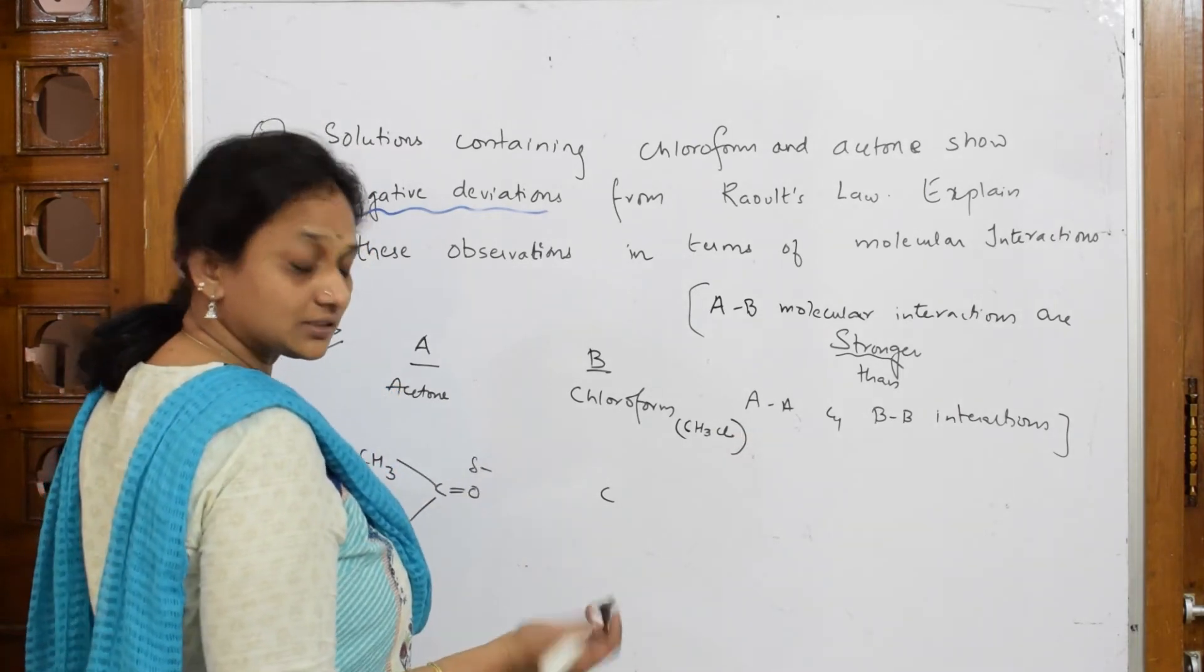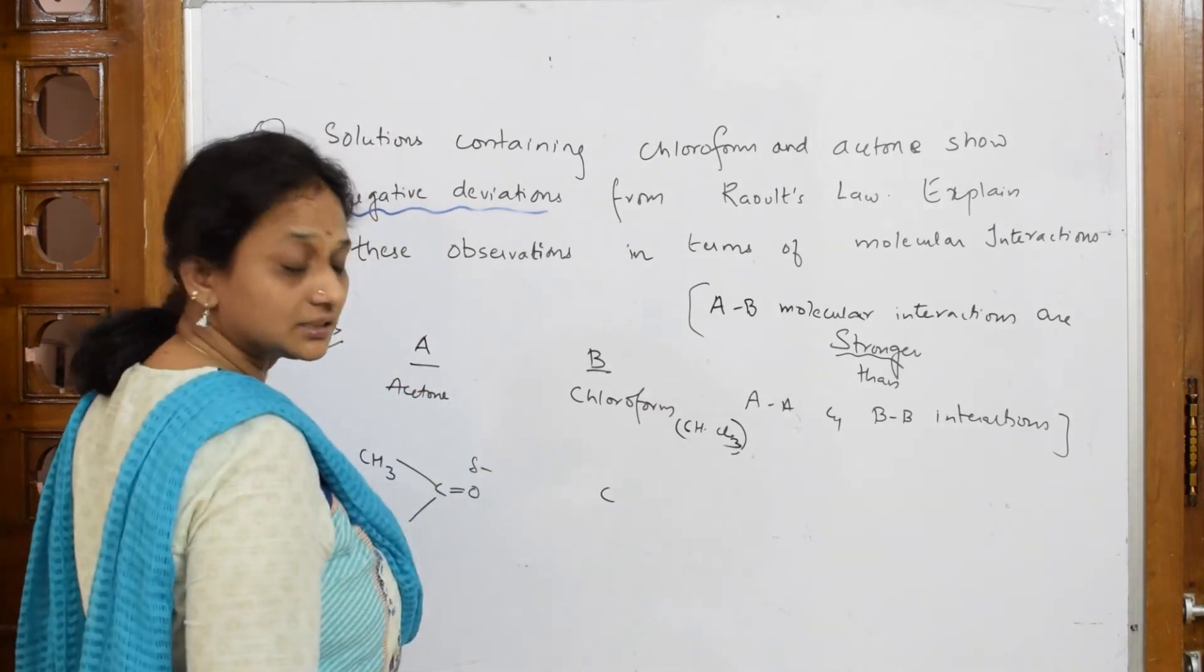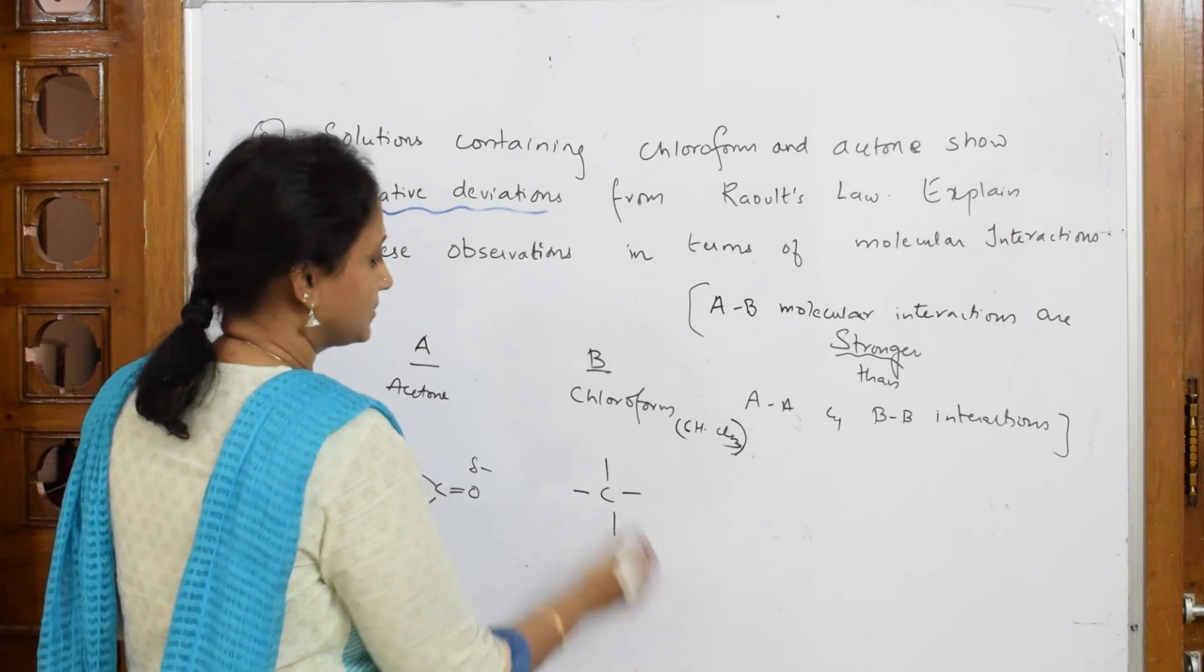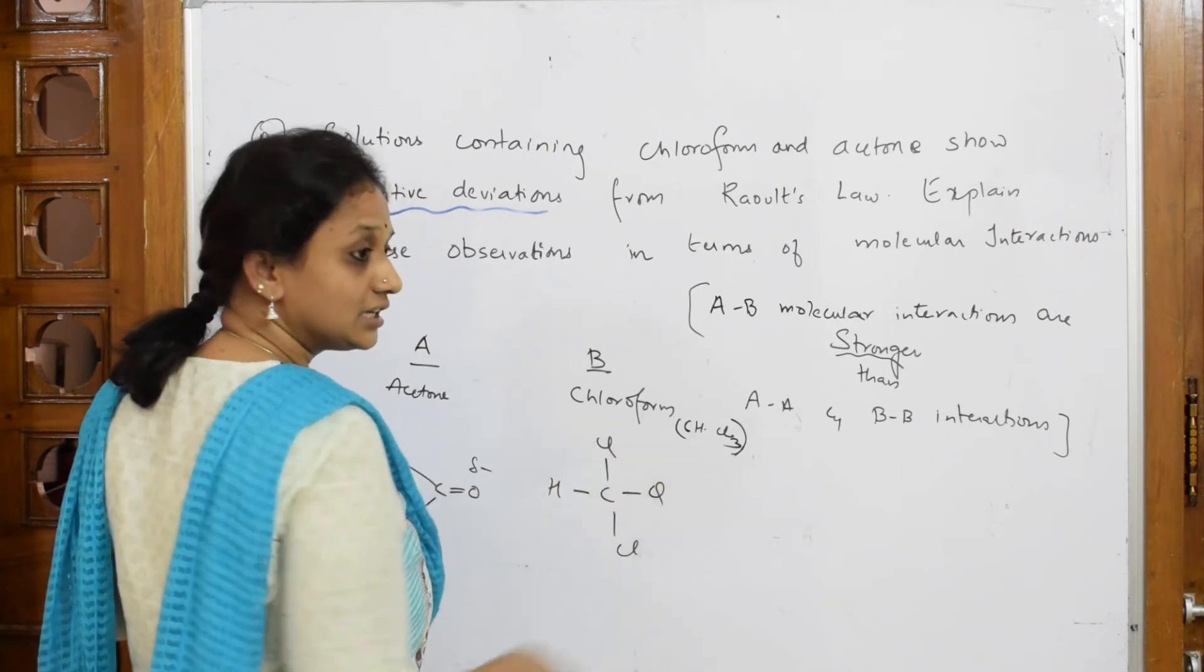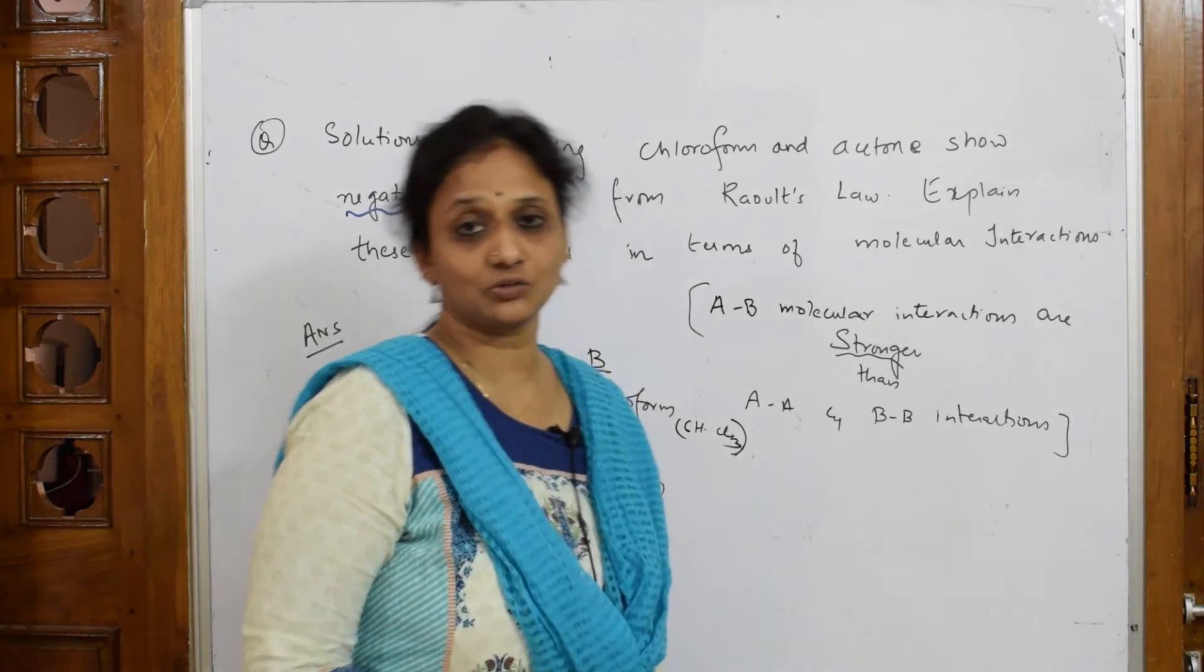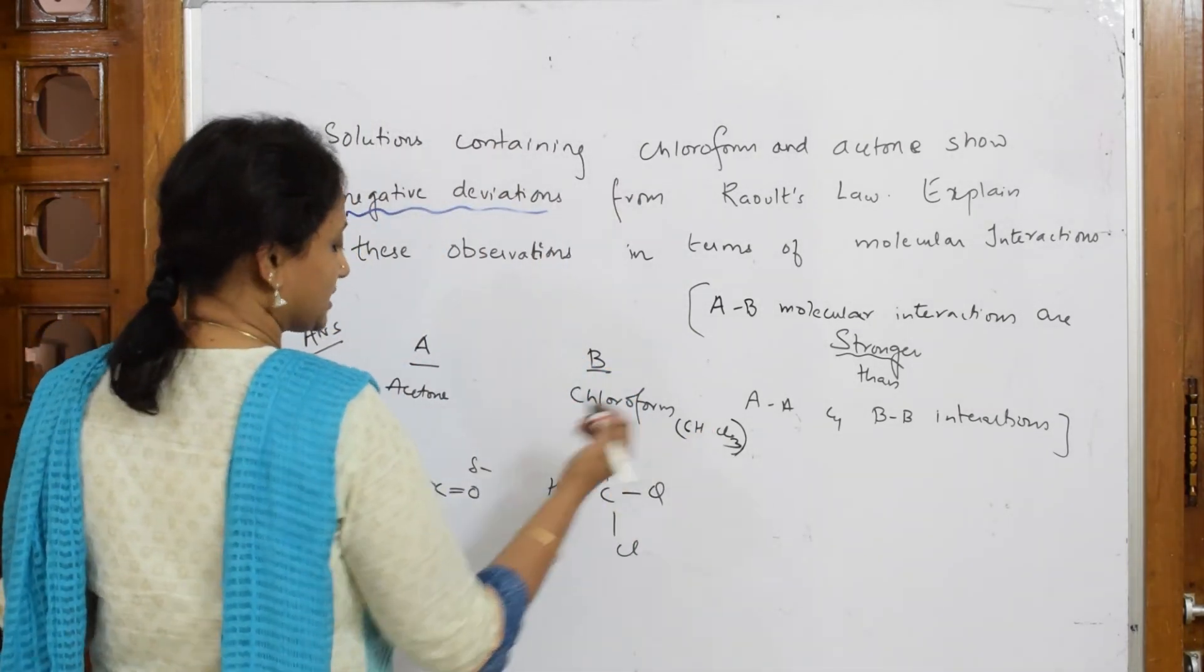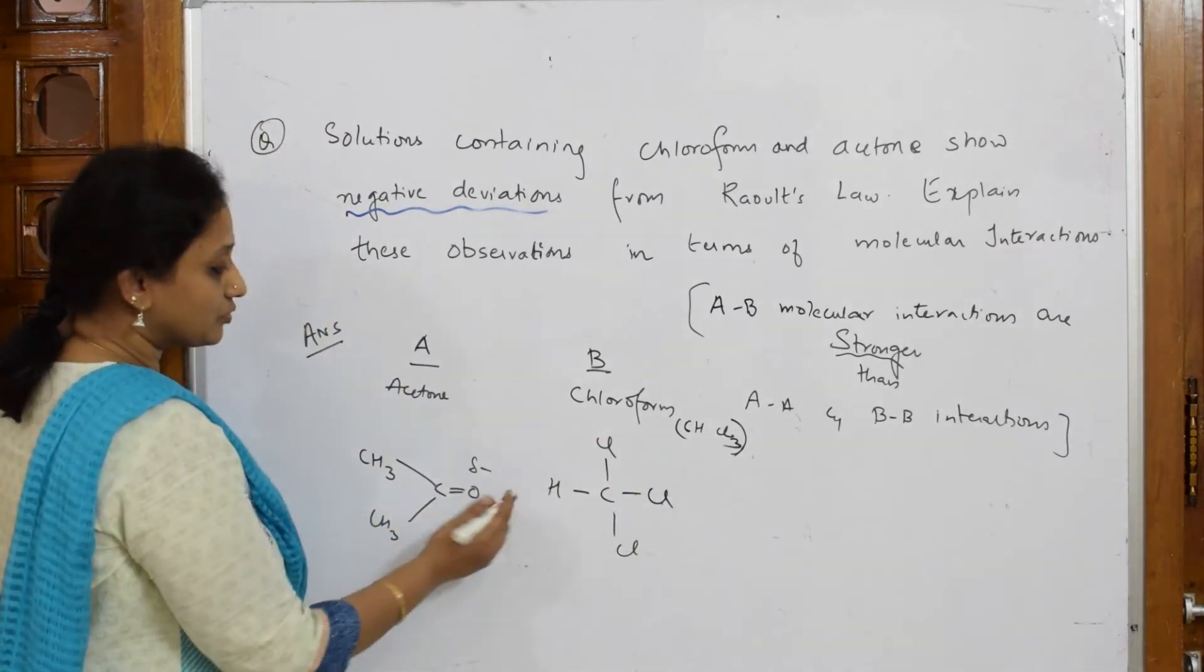Now this is your chloroform. Chloroform formula you have written already in isocyanide test also. CHCl3 - here C, here H, so one, two, three. Earlier I did CH3Cl which is methyl chloride - that's wrong. CHCl3 is chloroform, yes.